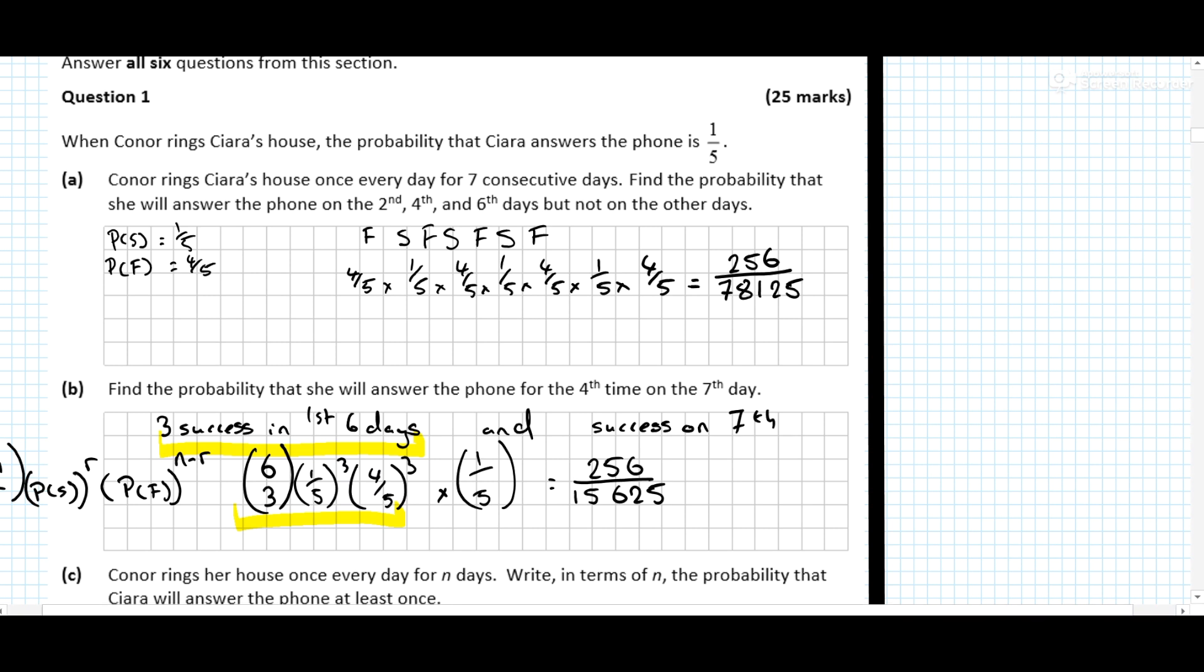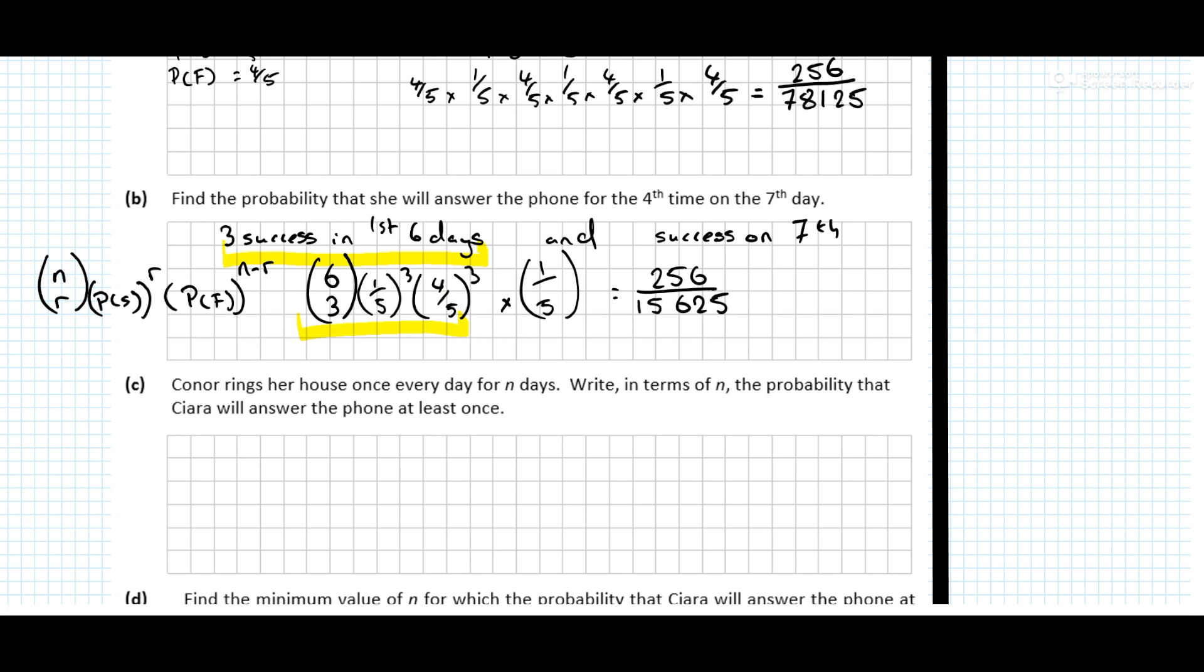So next question, Connor rings the house once every day for n days, write down in terms of n the probability that Kira will answer the phone at least once. Okay, well, what's the probability in one day that she doesn't answer the phone? Was 4 over 5. If it was 2 days, the probability she doesn't answer the phone is 4 over 5 by 4 over 5, which would be 4 over 5 squared.